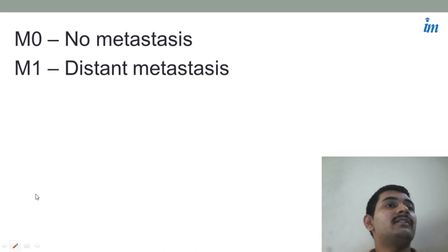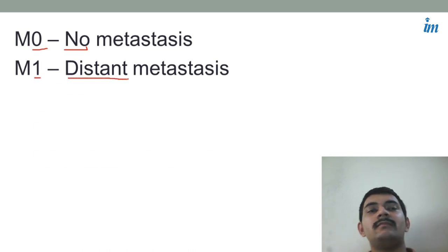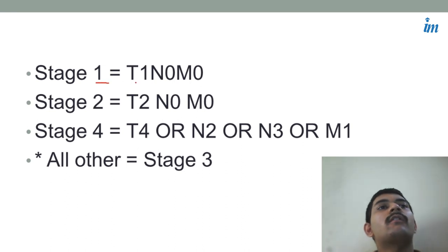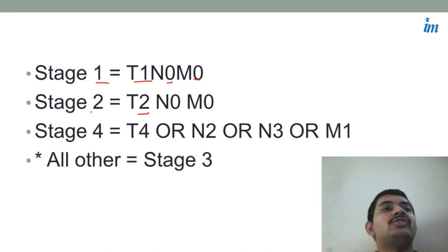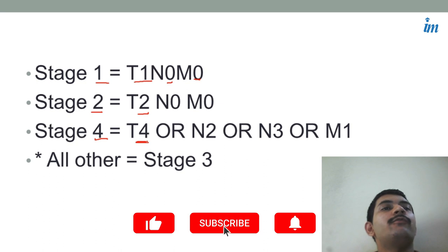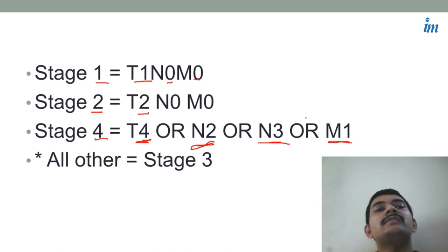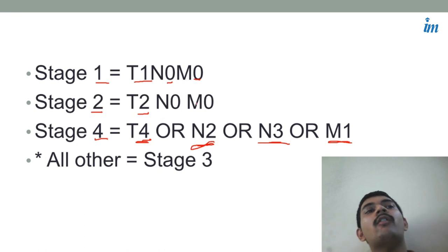For M staging: M0 means no metastasis, M1 means there is metastasis. To understand the overall stages: remember one goes with one, two goes with two. Only T1 with N0 and M0 goes to stage one; only T2 goes with stage two. Stage four has four possibilities — T4, any condition with N2, any condition with N3, or M1. Any other combination except stage one, two, and four goes to stage three — meaning a mixture of T and N findings not fitting those categories will be stage three.